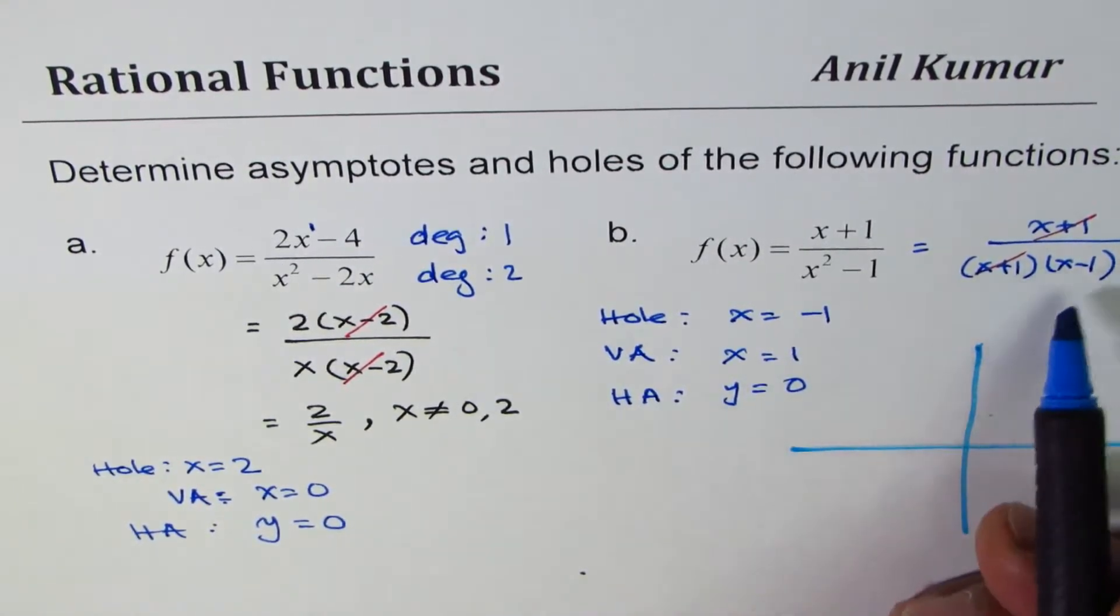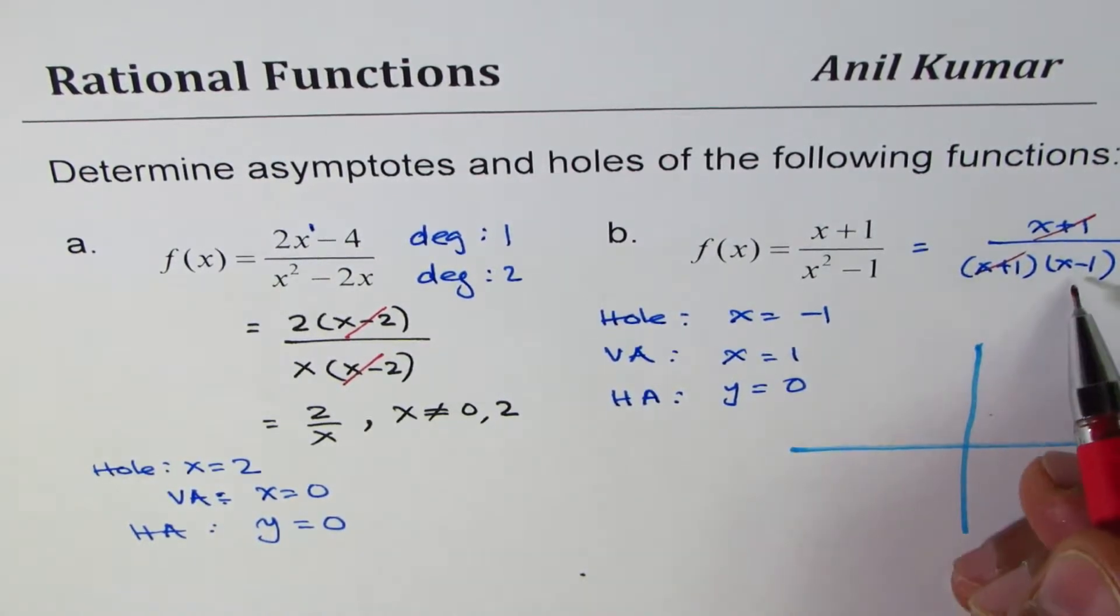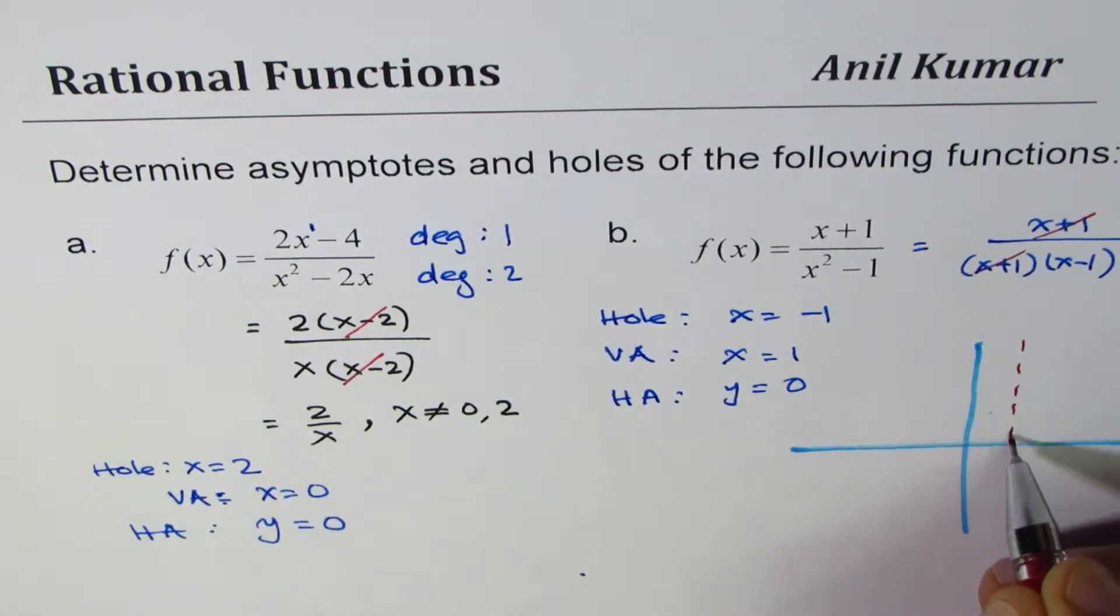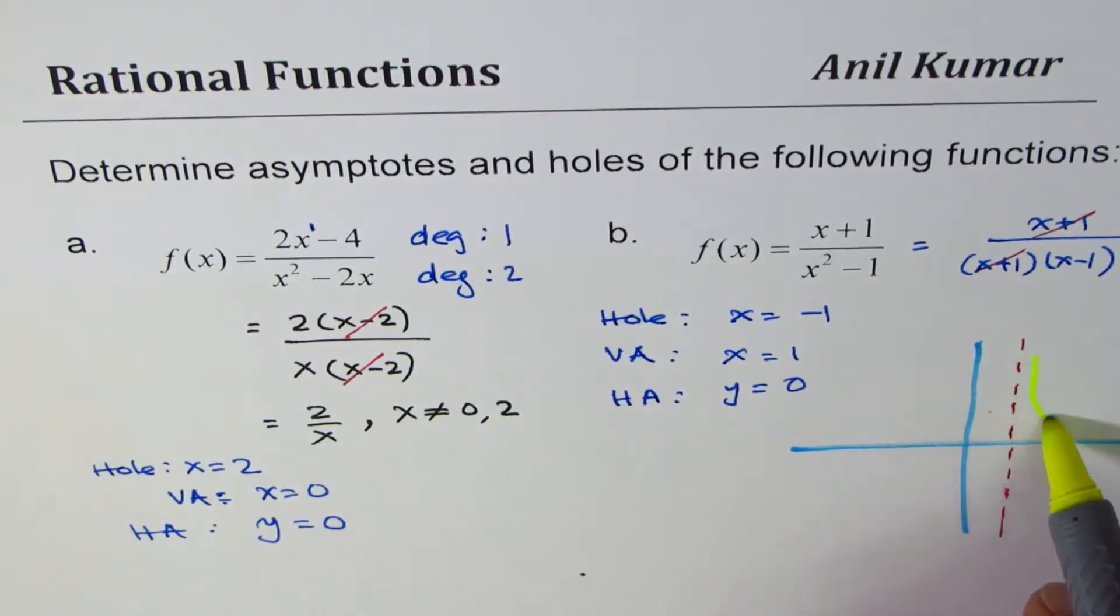This equation is 1 over x minus 1. That is to say, vertical asymptote at 1, kind of like this. What you notice here is that the 1 over x graph is shifted 1 unit to the right, so it will be kind of like this.